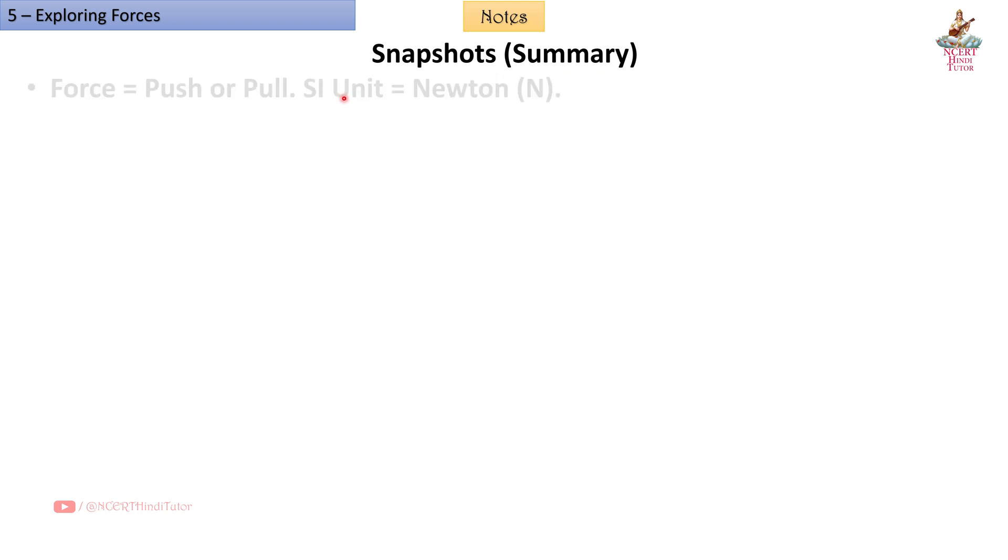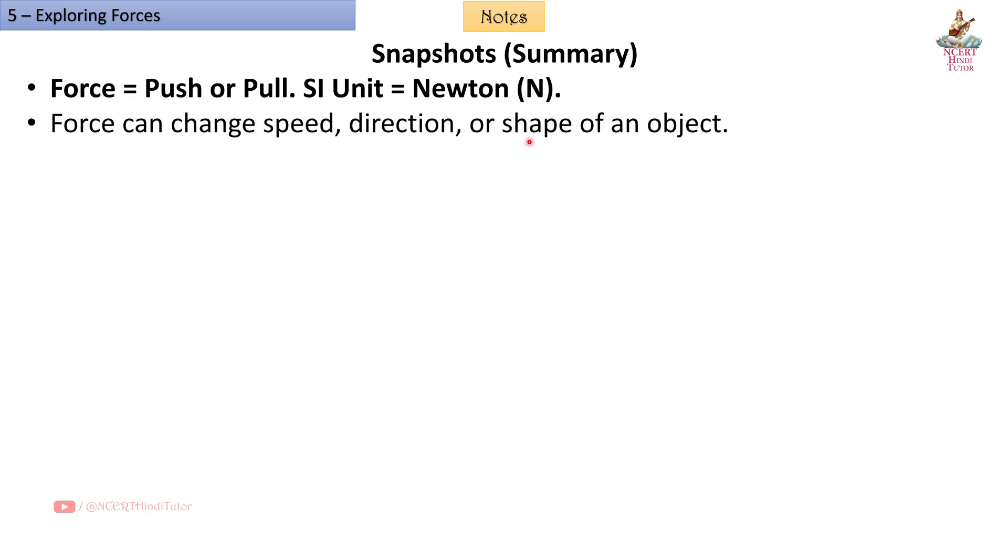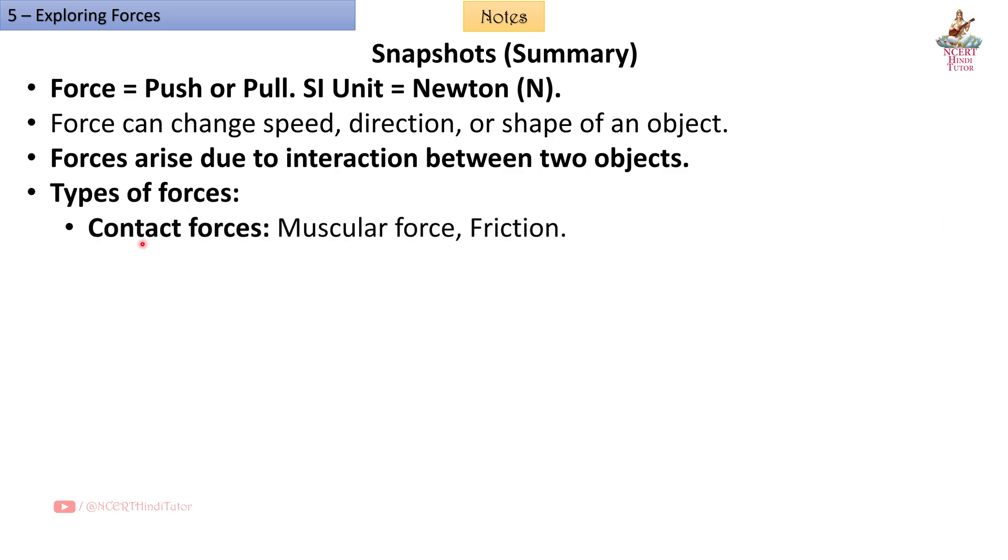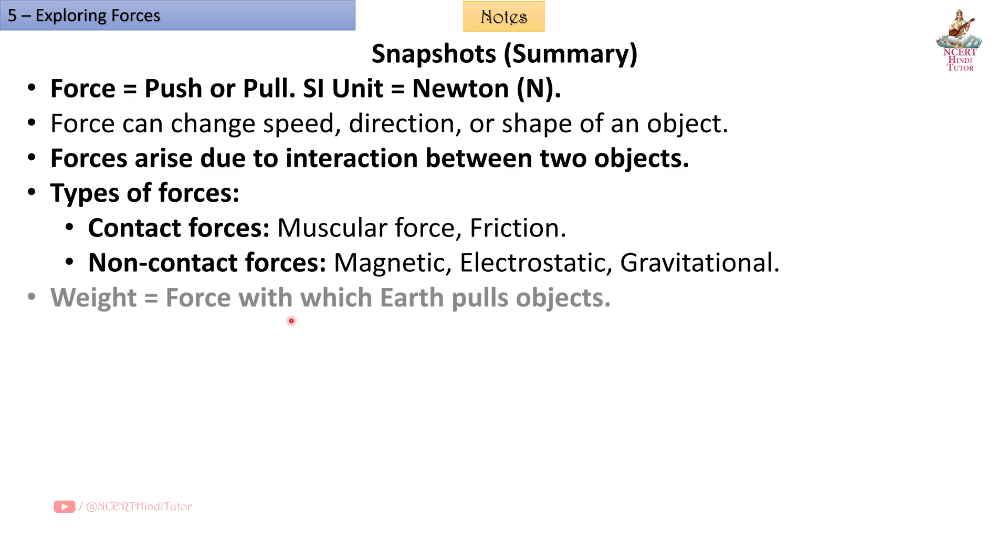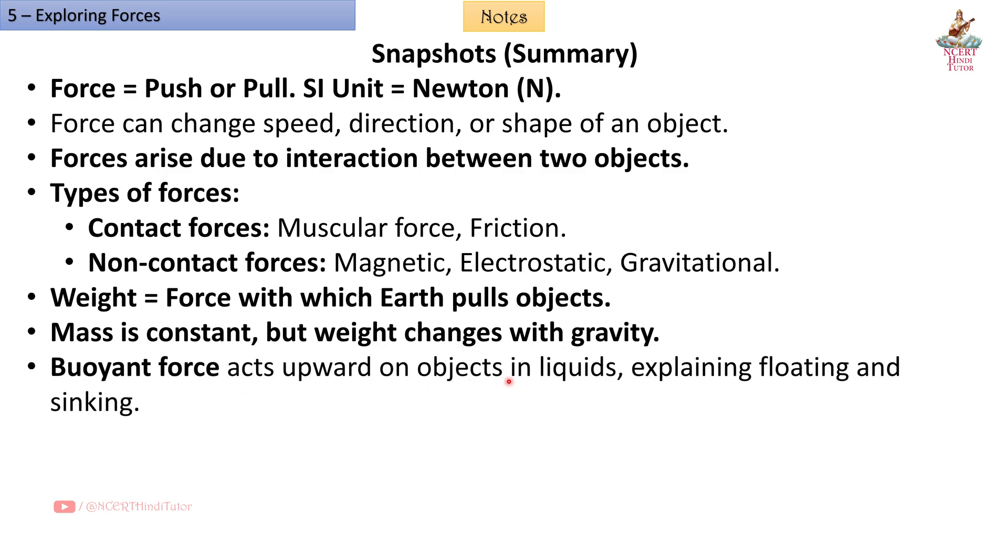Snapshots - Summary: Force is a push or pull. SI unit is Newton (N). Force can change speed, direction or shape of an object. Forces arise due to interaction between two objects. Types of forces: Contact forces - muscular force, friction. Non-contact forces - magnetic, electrostatic, gravitational. Weight is the force with which earth pulls objects. Mass is constant but weight changes with gravity. Buoyant force acts upward on objects in liquids, explaining floating and sinking.